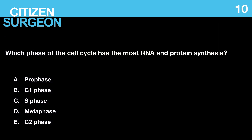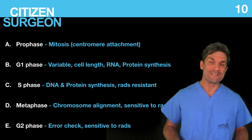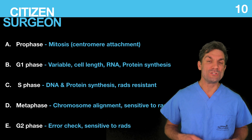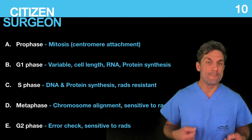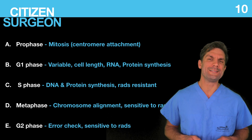Question ten, the last question: which phase of the cell cycle has the most RNA and protein synthesis — prophase, G1 phase, S phase, metaphase, or G2 phase? If you said G1 phase, you got the right answer. This comes up on these exams year after year. The G1 phase is where you get most of your RNA and protein synthesis. Don't let the S phase fool you — that's where you get DNA synthesis.